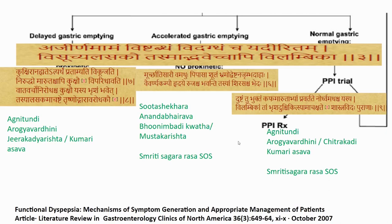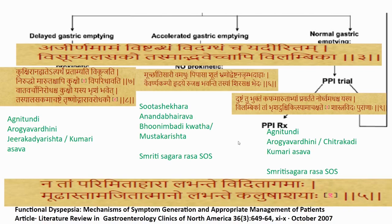In total, the approach of Ayurvedic treatment is definitely better than what the contemporary system can provide. The important guideline according to Ayurveda is — Nacha Parimita Ahara Labhante Vrithagam, Mudhasthama Adhita Atmanaha Labhante Kalushashayah — the basic important issue is you always have to have Parimita Ahara, a proper diet. If you have a proper diet consumed to the physiological limit required, you will never have this disease. Only those who do not follow that regimen tend to develop these complications. This guideline is a very important guideline to prevent these conditions.